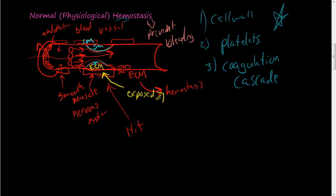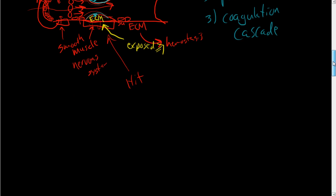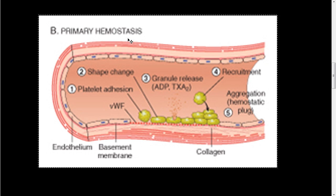We're going to continue our discussion on normal physiological hemostasis. In this video we're going to talk about the cell wall and how it participates or contributes to this normal physiological hemostasis. This picture here describes primary hemostasis. So primary hemostasis involves these endothelial cells, and if these endothelial cells get damaged, there's a space where the collagen or ECM is exposed.